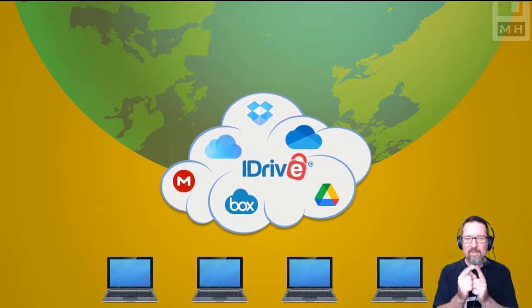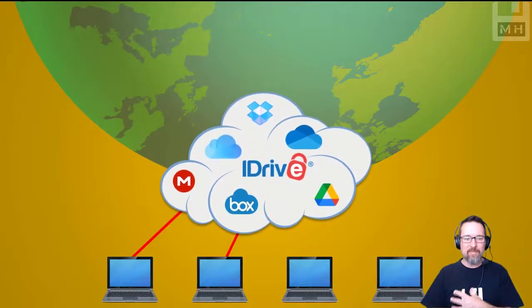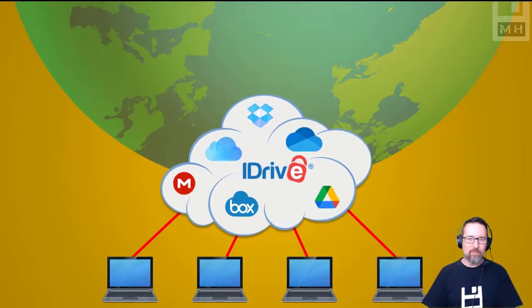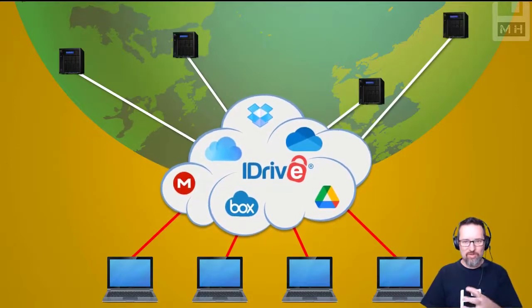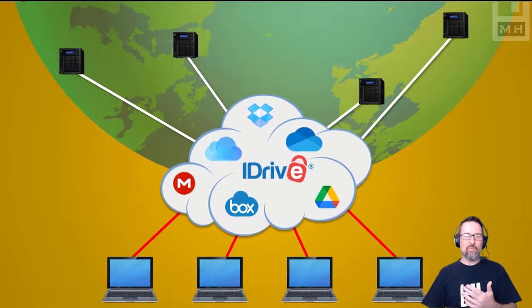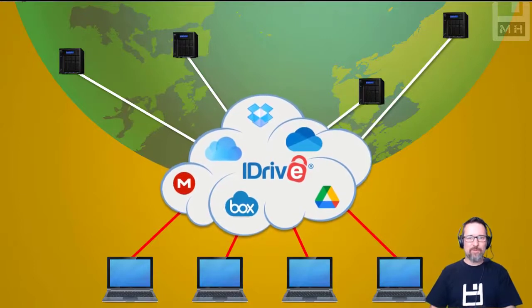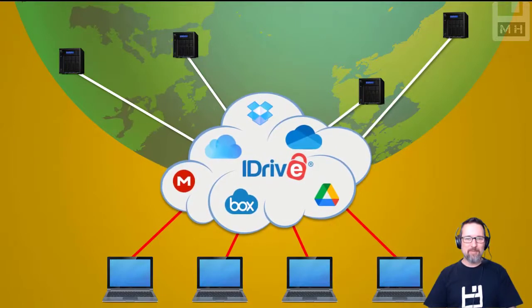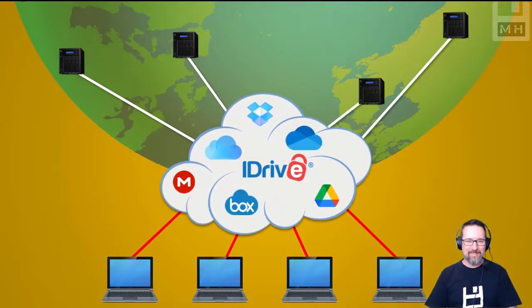Using software running on our computers, we can upload or copy our files to these cloud applications. These applications then connect to servers and hard drives located all around the world. We don't actually know exactly where our data is going — it's on a server somewhere in the world. When you save something to OneDrive, for example, it's somewhere out there on the internet.